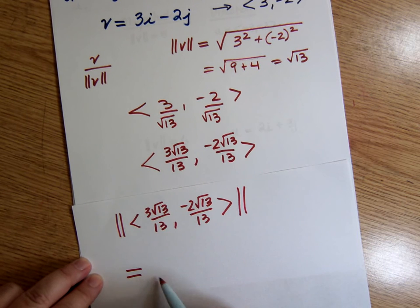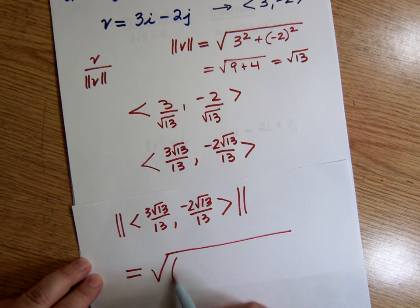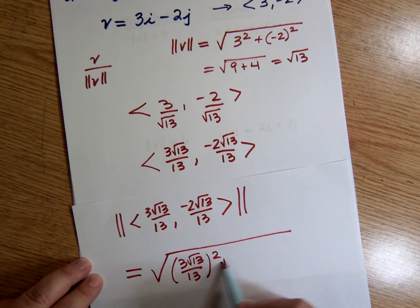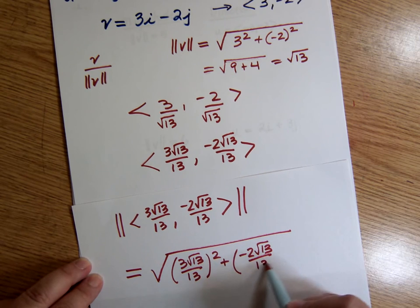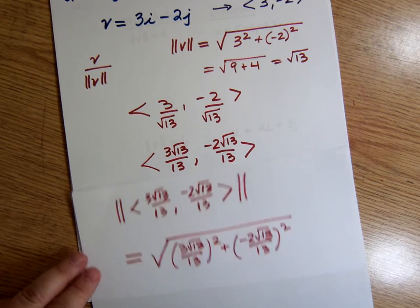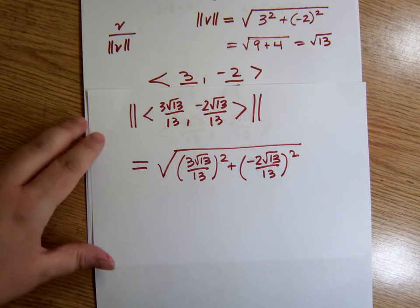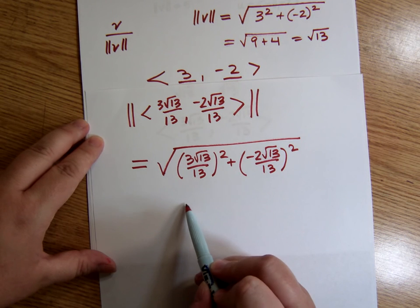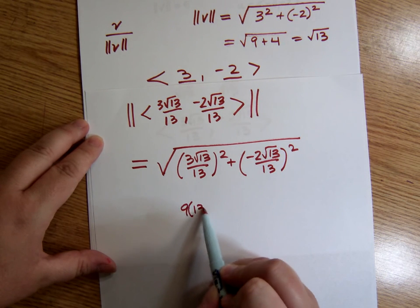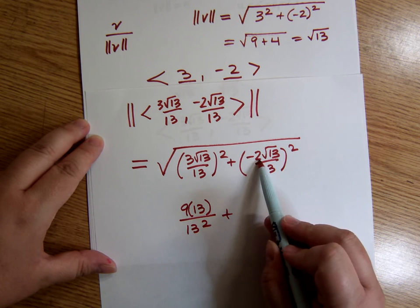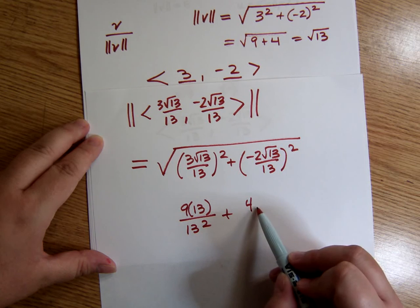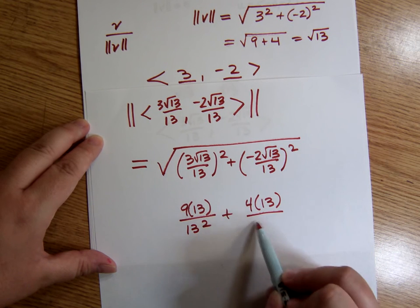So this is Pythagorean theorem or distance formula. You take the horizontal component squared plus vertical component squared. This is just checking. So this would be 9 times 13 over 13 squared plus negative 2 times negative 2 is 4 times 13 over 13 squared.